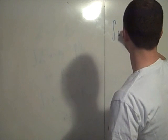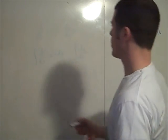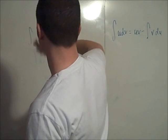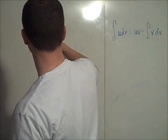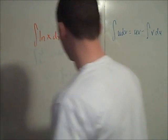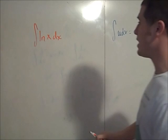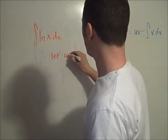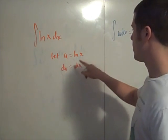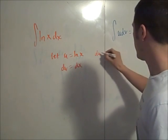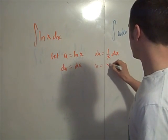So integral of u dv is uv minus integral v du. Now, the question is, what's the integral of log x dx? So, we have to choose which one of these is u and which one of them is dv. So, we're going to let u be log x and dv be dx.